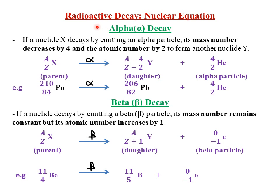We start by discussing the first type of radiation, which is called the alpha particle — so we look at the alpha decay. If a nuclide X decays by emitting an alpha particle, then its mass number decreases by 4 and its atomic number decreases by 2 to form another nuclide Y. The original nuclide we call the parent nuclide, and the newly formed nuclide we call the daughter nuclide. In terms of an equation,